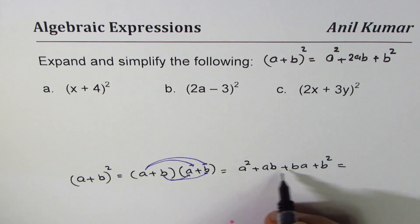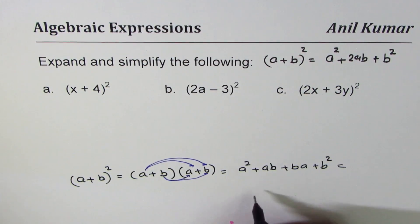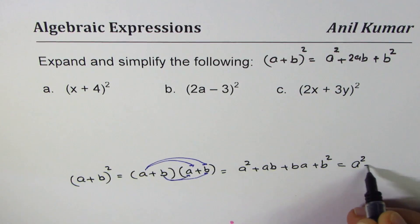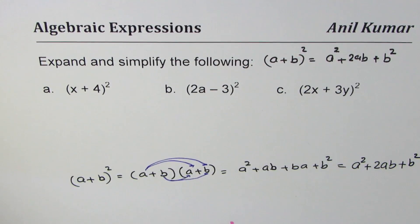So what you get here is a square plus ab and then you need to multiply b with both of them. So you get ba plus b square. Now ab and ba is same thing, ab ba is also ab, a times b. That is commutative law of product. So we indeed get a square plus 2ab plus b square.